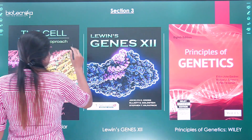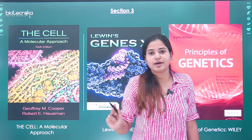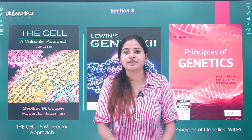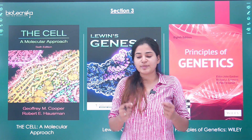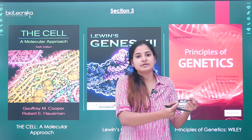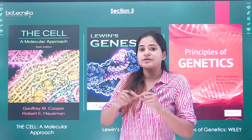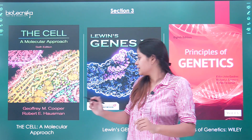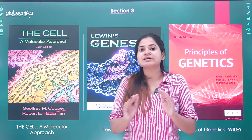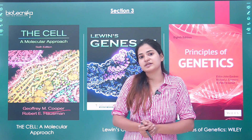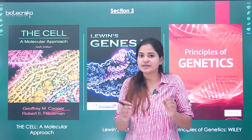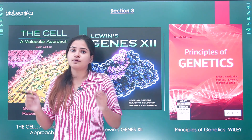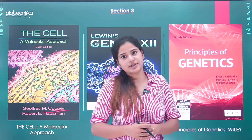Section 3 starts with cell biology. Alberts is a basic standard book which students usually refer to. But I have found that especially for signaling cascades, cell division, and membrane biology, Cooper provides a very clear classification with detailed diagrammatic explanation. You can refer to Cooper for basic cell biology. You can even refer to Lodish, but Cooper is really good if you want to understand concepts using diagrams and charts.